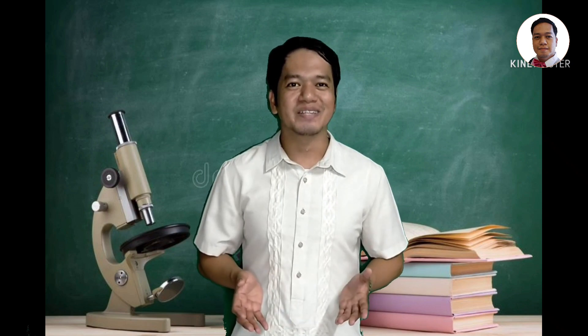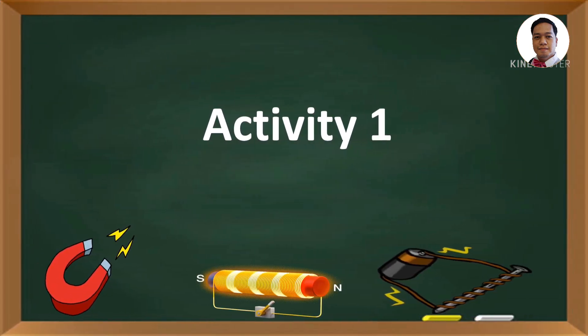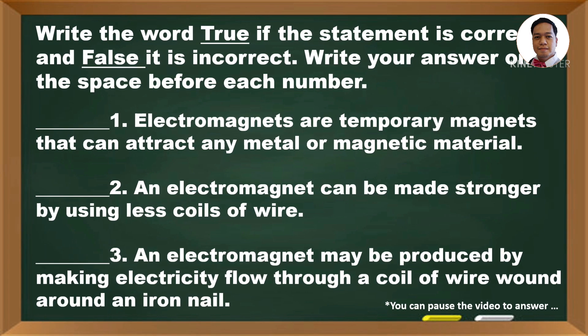Let's answer this activity. Activity number 1: Write the word true if the statement is correct and false if it is incorrect. Write your answer on the space before each number.